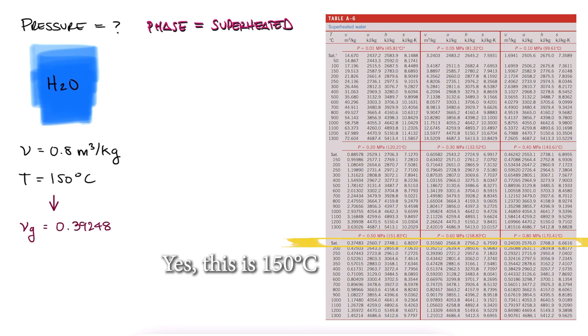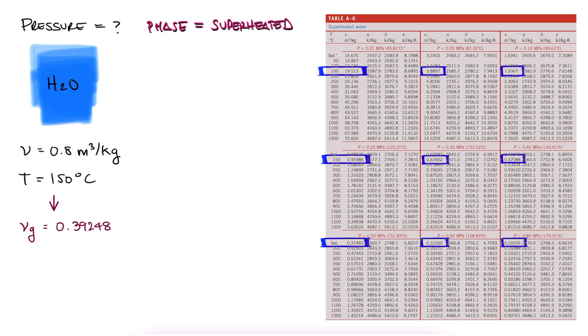Now, this process is slightly different to what we have been doing when interpolating. Since what we know is the rows in which our given specific volume should appear, we're not just going to go directly to one of these subtables. We're going to look at all the different subtables and select the two that for a temperature of 150 degrees goes over and under the given specific volume of 0.8.